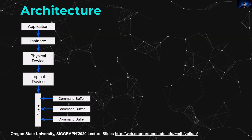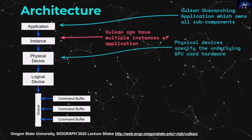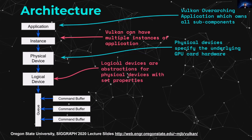The Vulkan application is the overarching component. From applications you can spin up instances, which then allow you to interact with your physical hardware. The physical device C++ component refers to the physical graphics card in your computer. You can create logical devices — also called windows or views — that allow you to interact with that physical device. You can have multiple logical devices for one physical device, multiple physical devices for an instance, and multiple instances for an application.